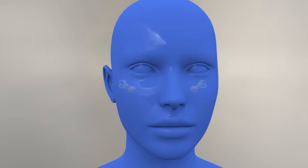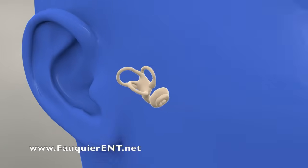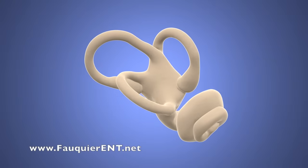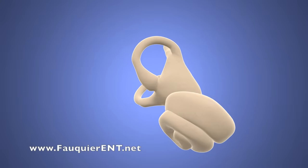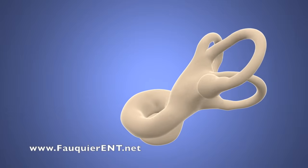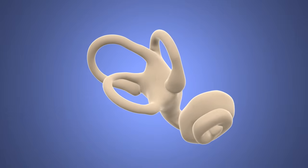Deep within each ear, there is a balance system called a labyrinth composed of three semicircular canals. These semicircular canals are also connected to the cochlea, which is the organ that allows for hearing.